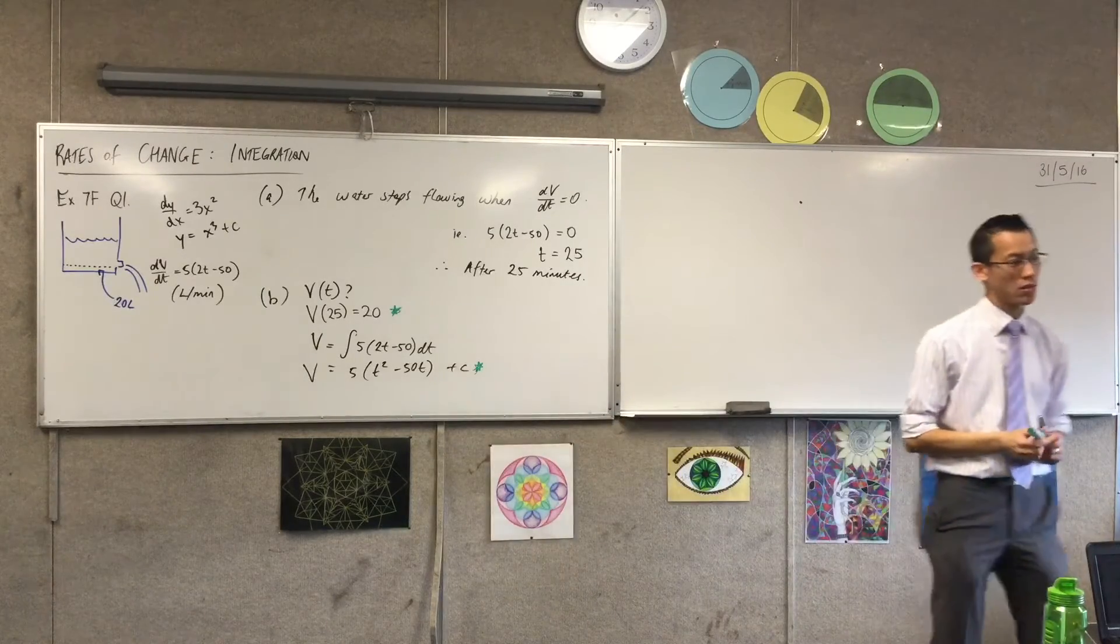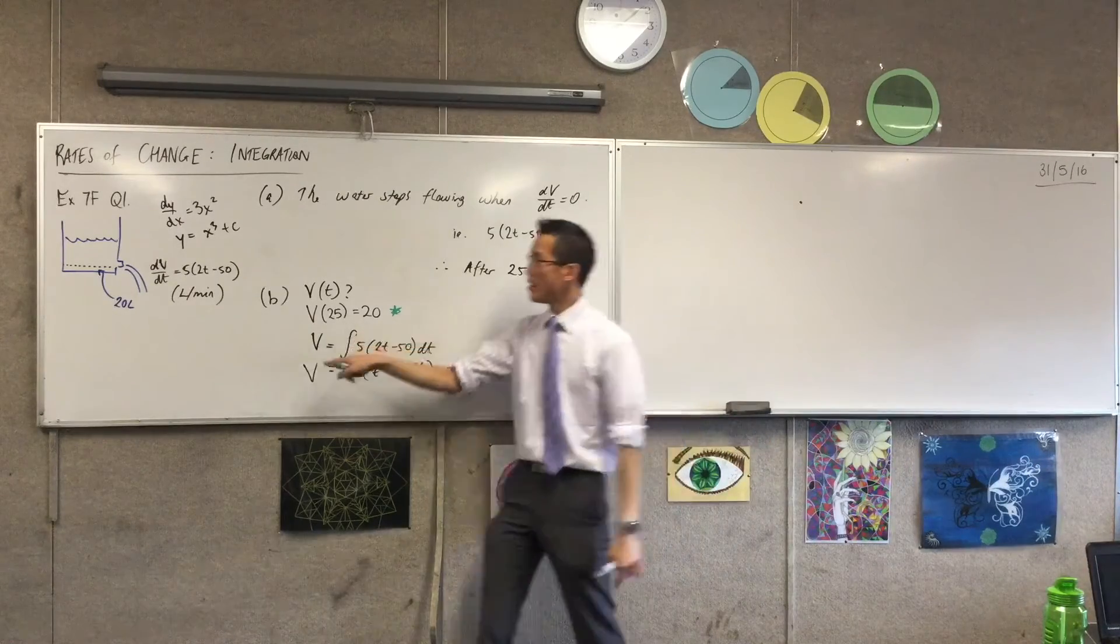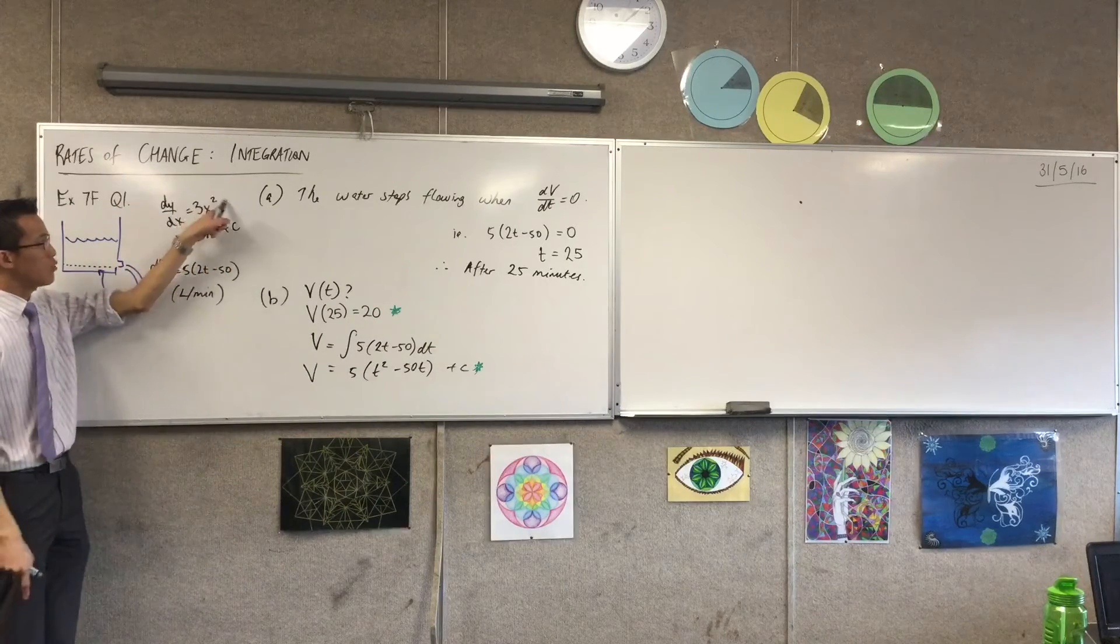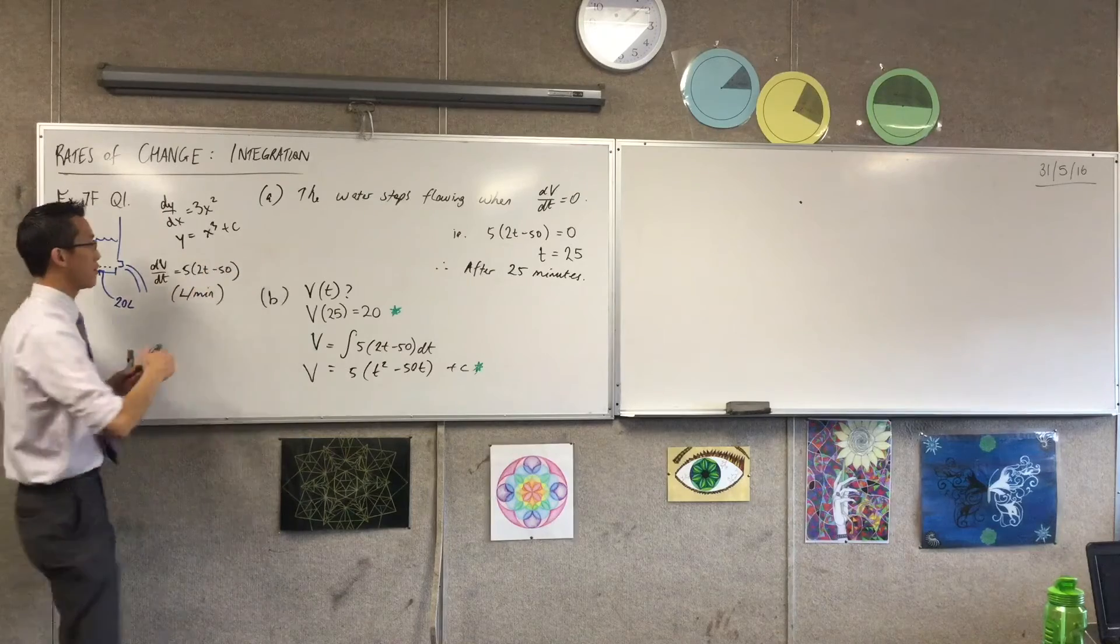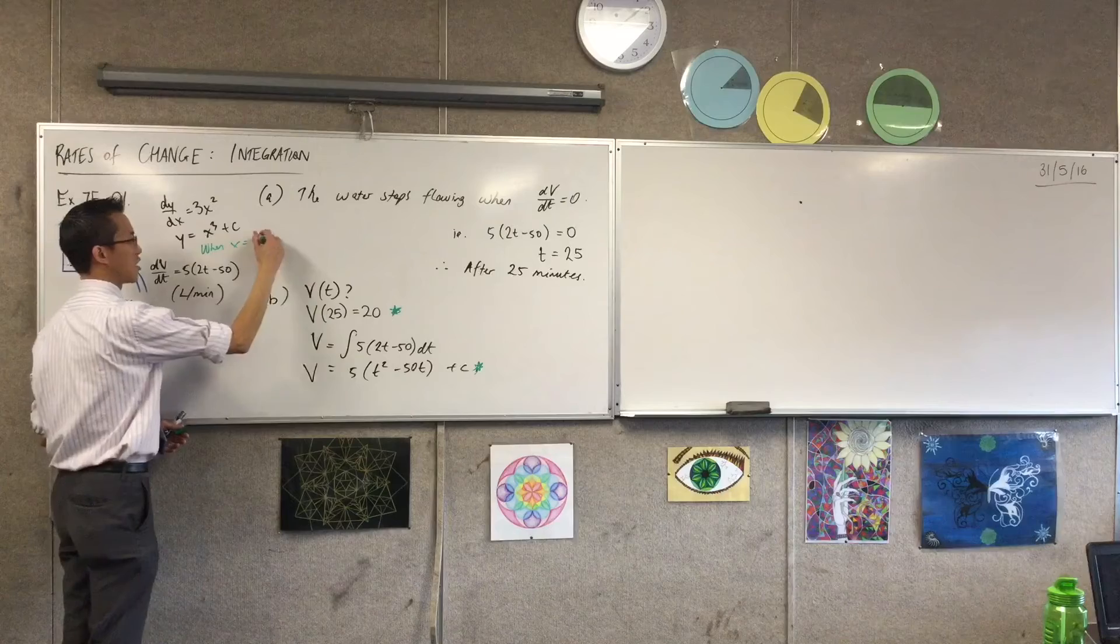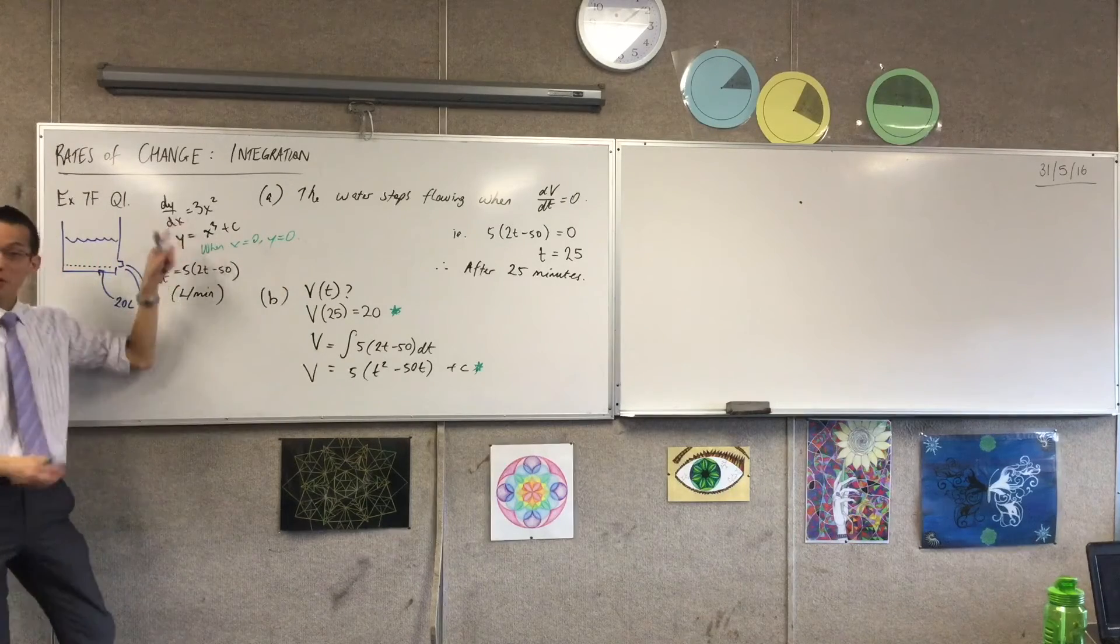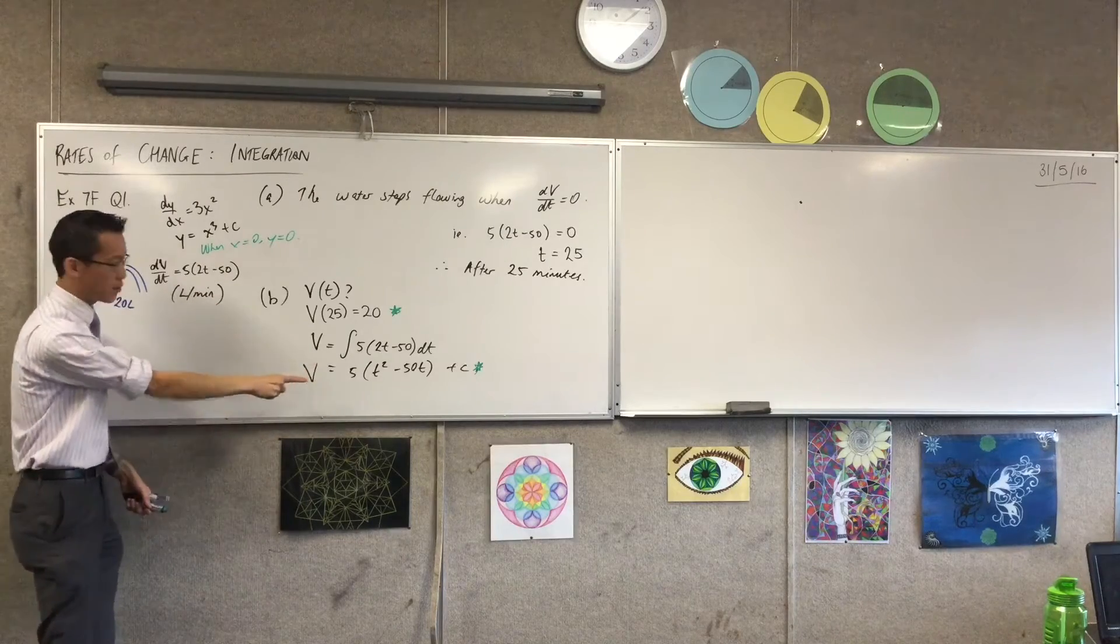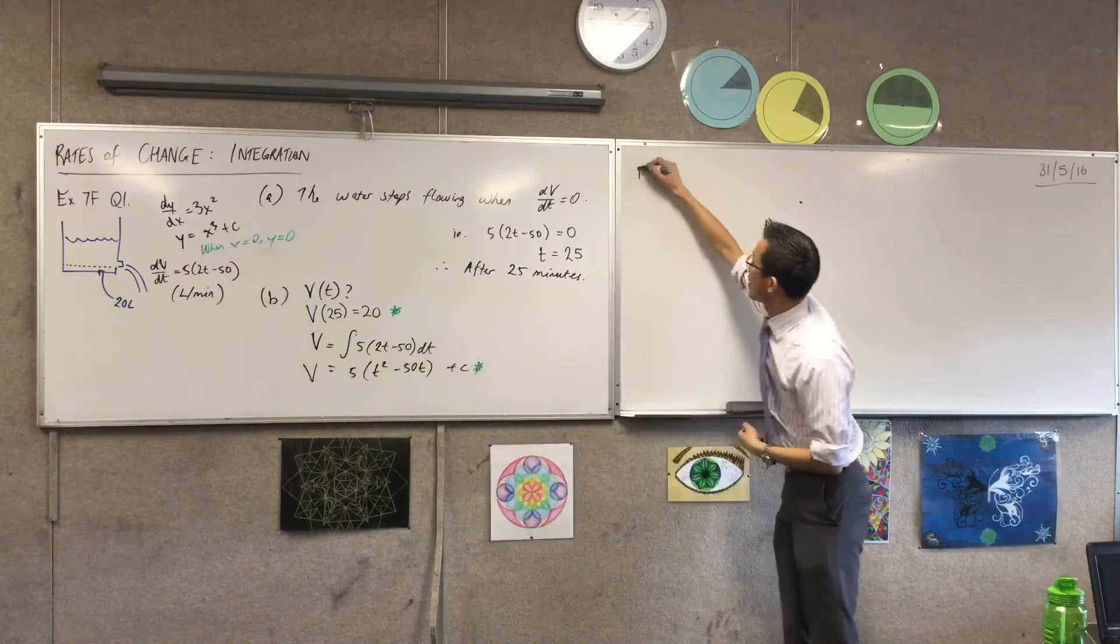I can find out what the constant is, because I know a particular point that the function passes through. That would be like coming to this question and saying, okay, sure, this derivative could be any one of these primitives. But if I know that when x equals, oh I don't know, let's just say it goes through the origin, I can use that to work out which one of the x cubed it would be, well, the x cubed plus zero in this case. So I'm going to pull out exactly the same trick here. I'm going to say, I'll go to the next board, I'm going to say, but